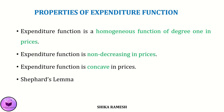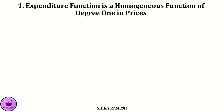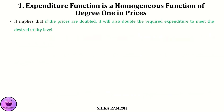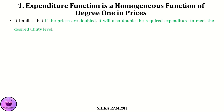Now let's see the mathematical derivations of each of these properties. The first property is that the expenditure function is a homogeneous function of degree 1 in prices. This property implies that if the prices are doubled, it will also double the required expenditure to meet the desired utility level.